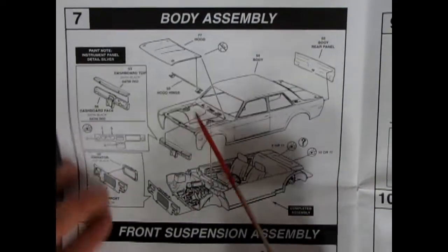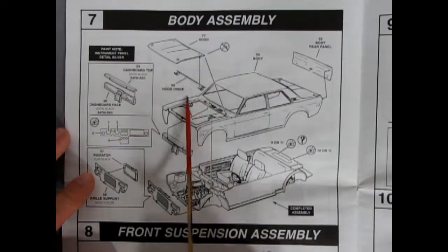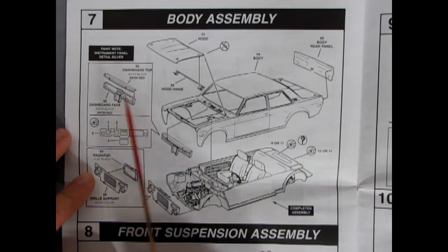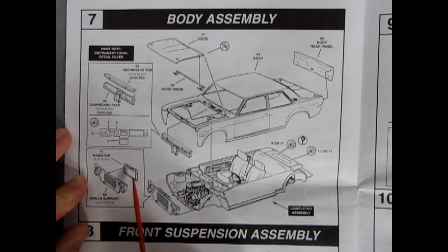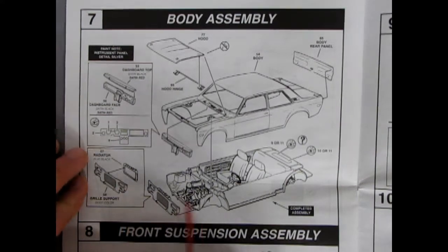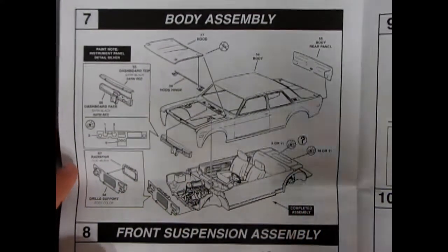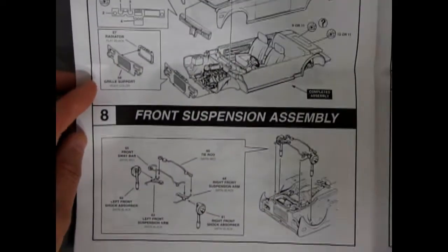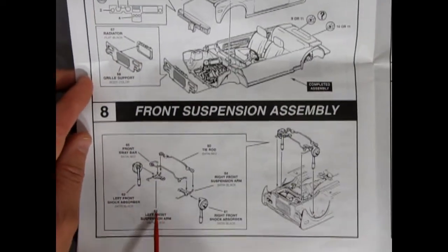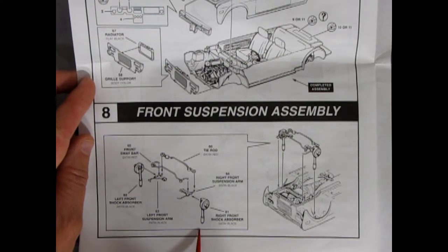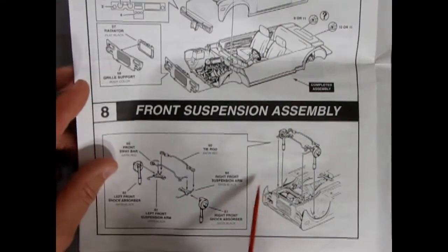And here we have our body assembly. The little hood and the hood hinge. Dashboard in two pieces. Easy to paint on the inside. The radiator and radiator grille support going in. As well as the rear body panel. And then our front suspension here. All independent of course. The shock absorber is coming down. Almost like a Ford F style.